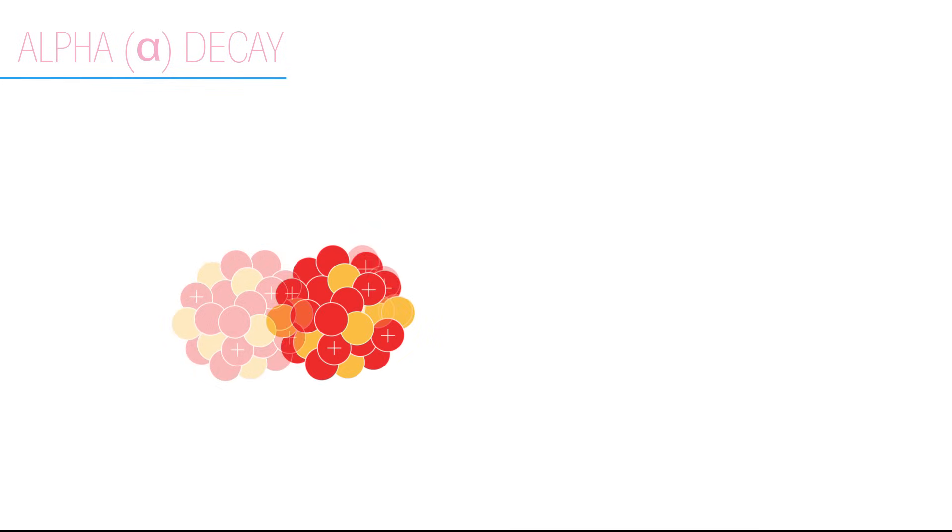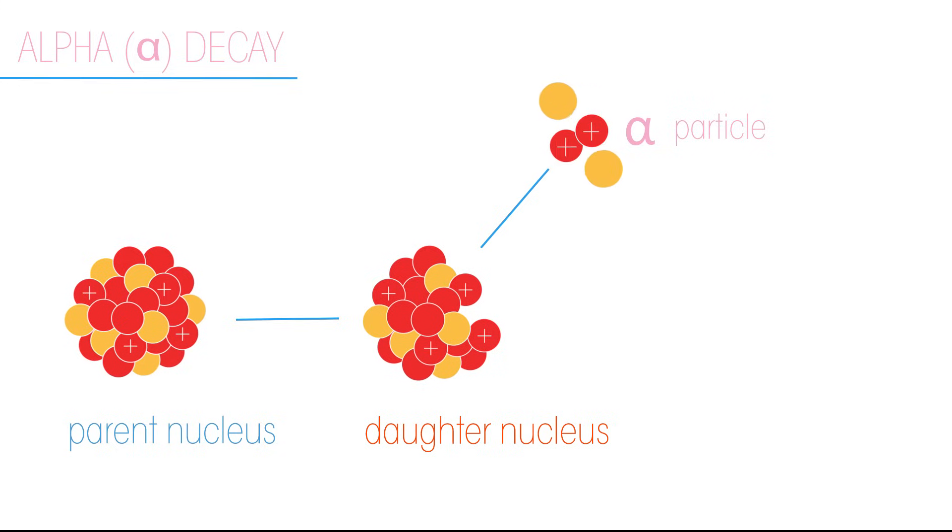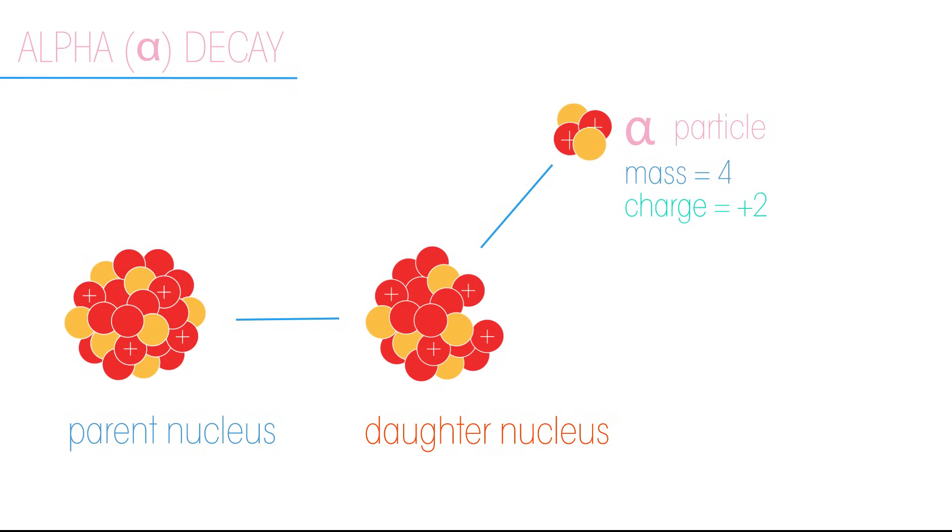Alpha decay is the loss of an alpha particle. An alpha particle is made of two neutrons and two protons. They have a mass of four and a charge of plus two.